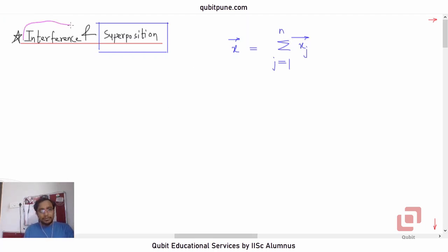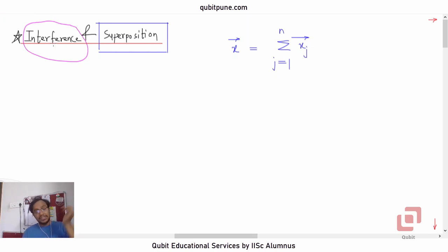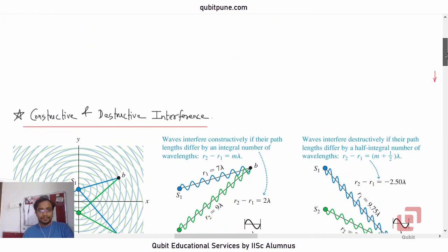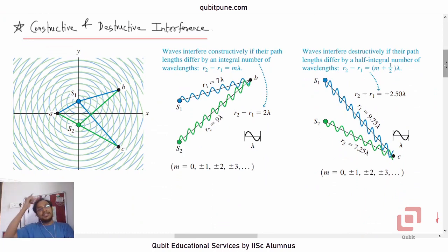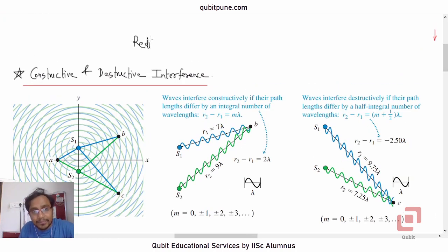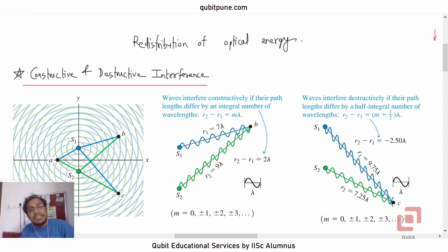Superposition tells us that the resulting displacement at any point due to multiple waves will be the vector addition of the individual displacements produced by each wave, ignoring the presence of the others. Interference refers to the phenomenon in which two waves overlap and produce patterns that cannot be explained by ray optics — we need wave optics. In both constructive and destructive interference, it is only a redistribution of optical energy.